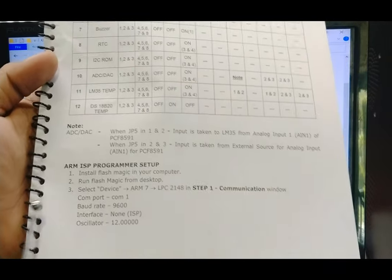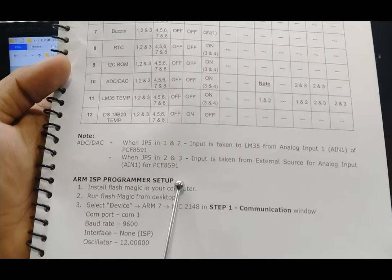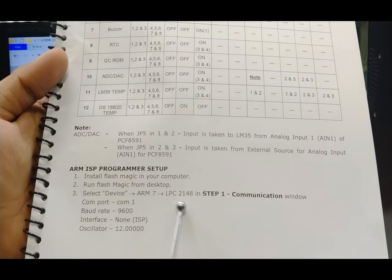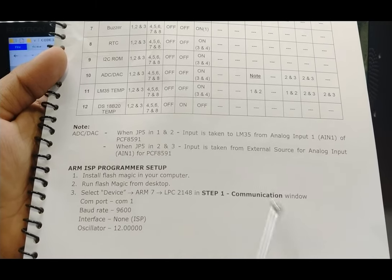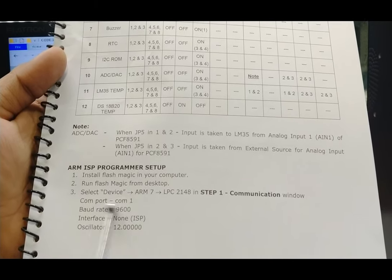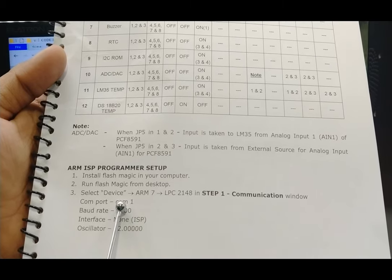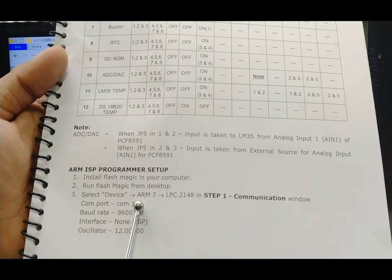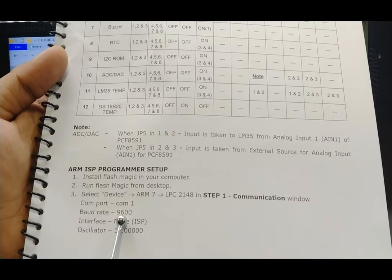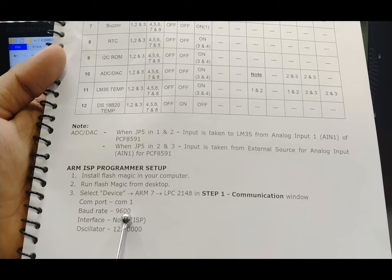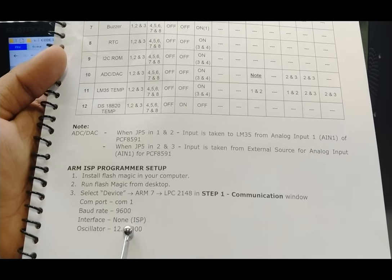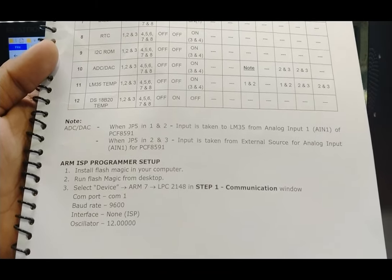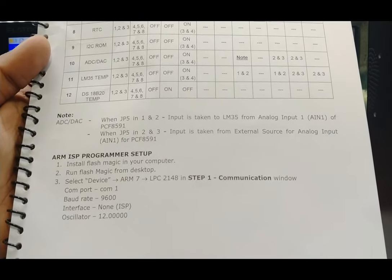Details are given in the user manual. The ARM ISP programmer setup — Flash Magic — must be installed. In step 1, select device ARM7 LPC2148. In the communication window, select COM port 2 as identified in Device Manager. The baud rate should be 9600, interface set to None, and oscillator speed is 12 MHz.